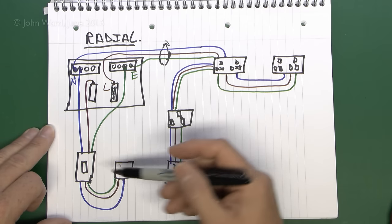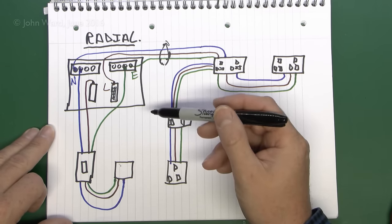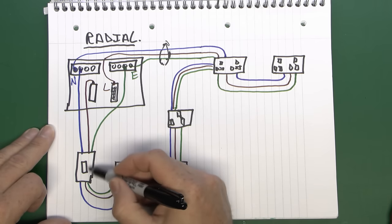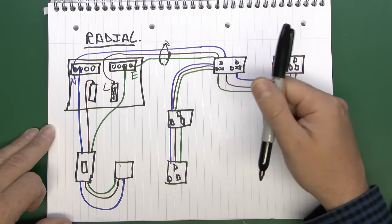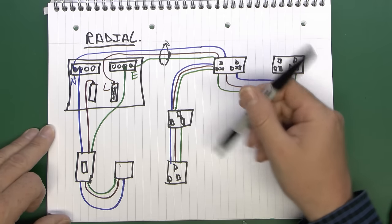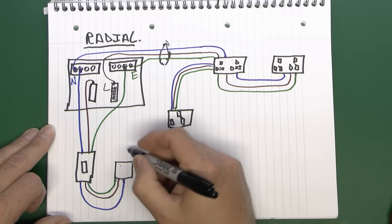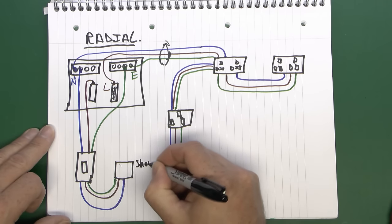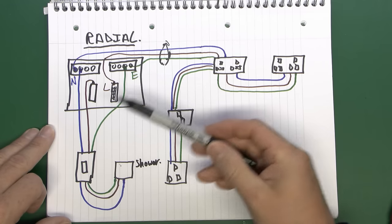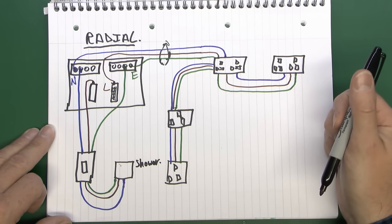The other most common type in houses would be an electric shower — again pretty much the same arrangement. You'd have your cable coming out of the consumer unit to some kind of isolator switch, either wall-mounted or one of those ceiling pull-cord varieties, and then from the switch your cable would just go out to the electric shower on the wall. It's a radial circuit because it starts at the consumer unit and ends at that particular piece of equipment.